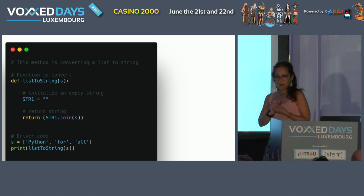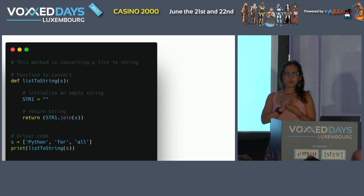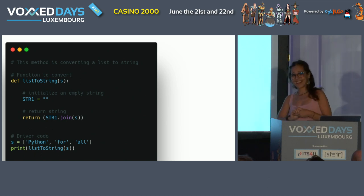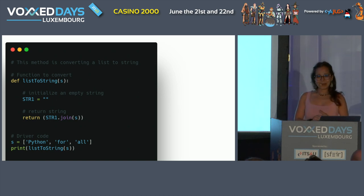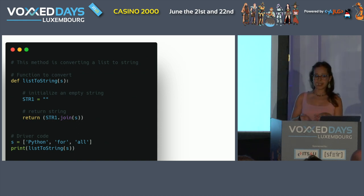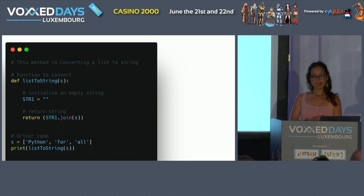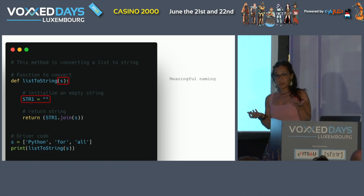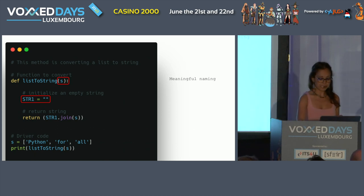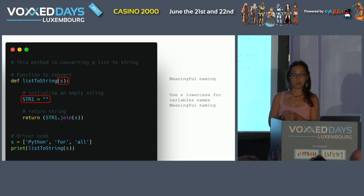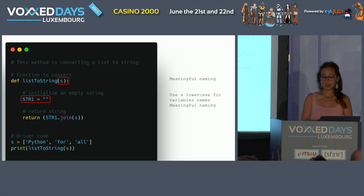Let's have a look at this small piece of code. Regardless of the programming language, this small function converts a list to a string. And if you ask me my opinion about this piece of code, I'm going to start by looking at the variables. We have variables that don't have meaningful names, so they should have meaningful names. The second variable doesn't follow the naming convention in Python, which requires lowercase when naming variables.